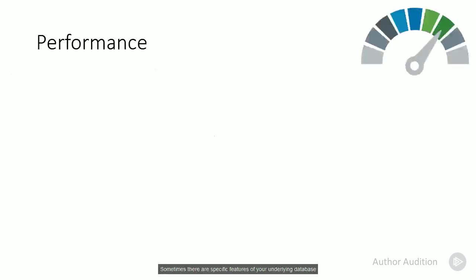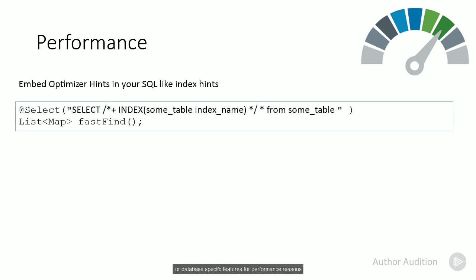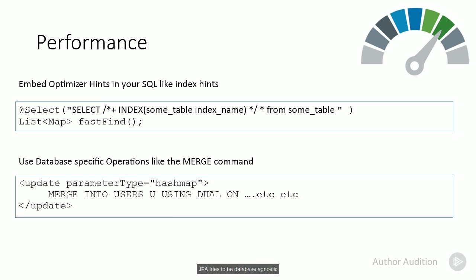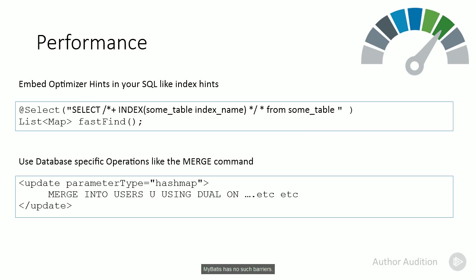Sometimes there are specific features of your underlying database that you need to access in order to maximize performance — for example, database-specific optimizer hints. JPA tries to be database agnostic, which can make it harder to embed database-specific features that you need to improve performance. MyBatis has no such barriers.